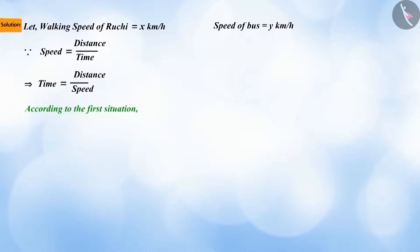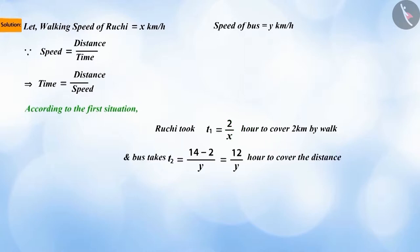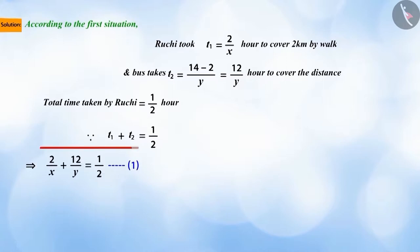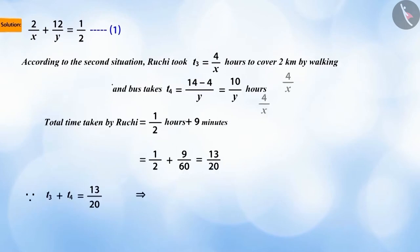Let Ruchi's speed be x km per hour and the speed of bus be y km per hour. Therefore, according to the first situation, Ruchi will take 2 by x hours to walk and 12 by y hours by bus to cover the distance. This way, Ruchi will take t1 plus t2 is equal to 1 by 2 hours to reach home. This gives us equation 1. Similarly, situation 2 gives us our second equation.